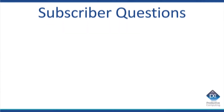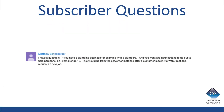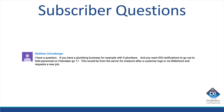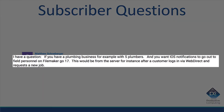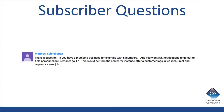Similarly, another question came in with almost the exact same idea. Matthew says: if you have a plumbing business, for example, with five plumbers and you want iOS notifications to go out to field personnel on FileMaker Go 17 — this would be from the server — after a customer logs in via WebDirect and requests a new job.